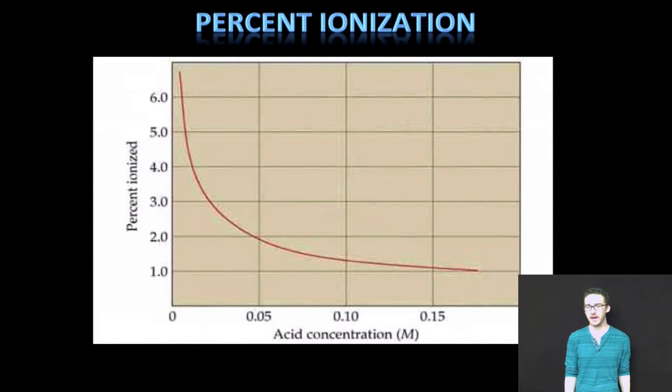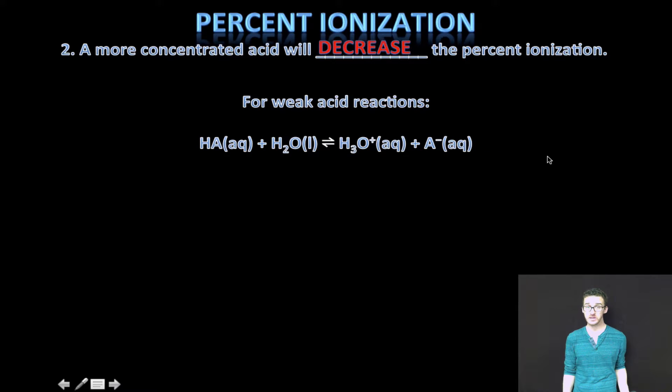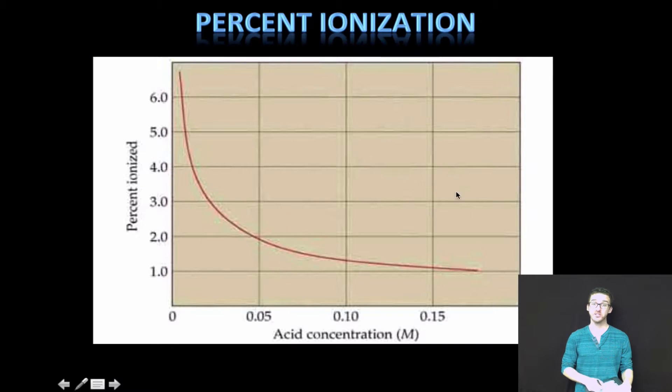And if you're really confused by that, the takeaway here is simply to recognize that if you dilute your acid, so as the acid concentration decreases, the percent ionization will increase. Conversely, the more concentrated your acid is will decrease the percent ionization. Again, take a moment just to study this image on your screen and in your notes.